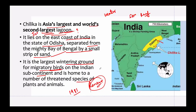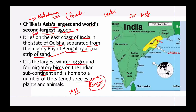The major attractions at Chilika Lake include the Irrawaddy dolphins — tourists come to see them, and they are often spotted off Satpada Island. There is also the large Nalabana Island, known as a forest of reeds, covering around 16 square kilometers in the lagoon area. It was declared a bird sanctuary in 1987.